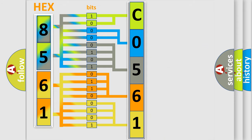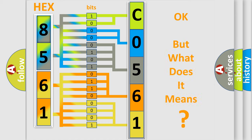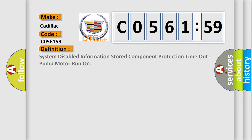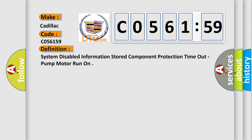We now know how the diagnostic tool translates received information into a more comprehensible format. The number itself does not make sense if we cannot assign information about what it actually expresses. So, what does the diagnostic trouble code C056159 interpret specifically for Cadillac car manufacturers? The basic definition is: system disabled information stored, component protection timeout, pump motor run on.